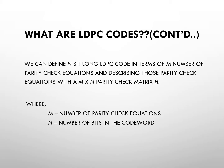We can define an n-bit LDPC code in terms of m number of parity check equations, describing those equations with an m×n parity check matrix H, where m is the number of parity check equations and n is the number of bits in the codeword. These parity check equations are mainly used to construct the parity matrix H.